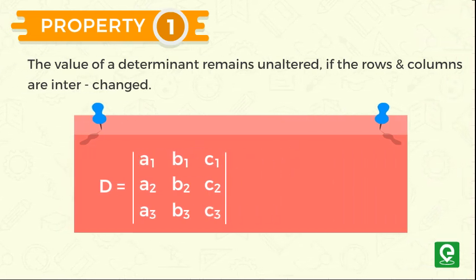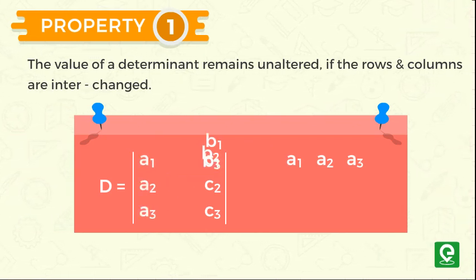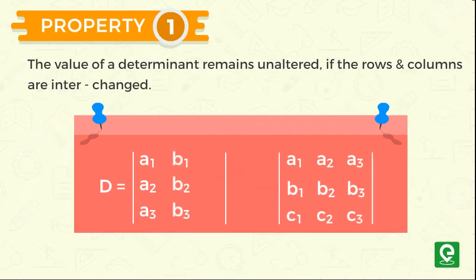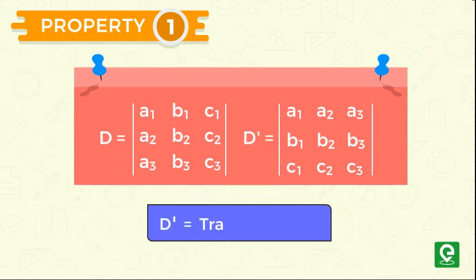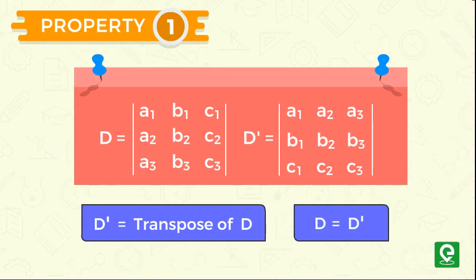If the rows and columns are interchanged, the determinant we get is a1, a2, a3, b1, b2, b3, c1, c2, c3. This determinant is called D dash. Here D and D dash are transposes of each other and their values are the same.